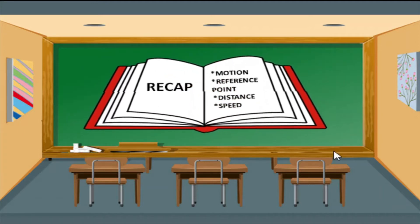Let us recapitulate what we have discussed in our previous lesson. Motion is a change of an object's position as caused by force. Reference point is a fixed place or an object used to determine the position of an object. Distance is the measure of how far or near two points from one another, measured using tools such as a ruler, tape measure, measuring wheel, and ultrasonic distance measurer. Meter is the standard unit of measurement used for distance or length.